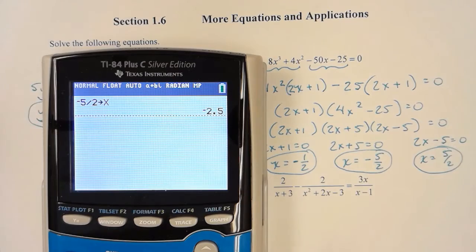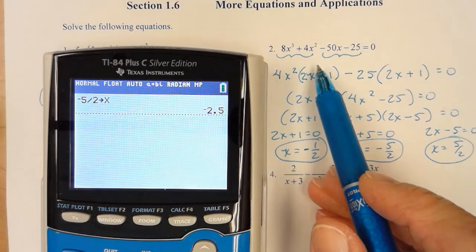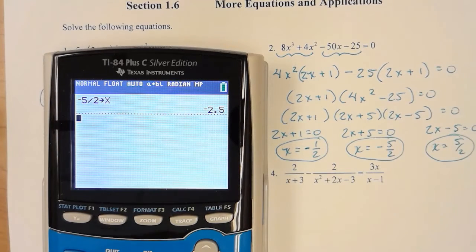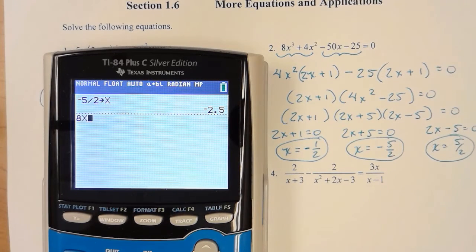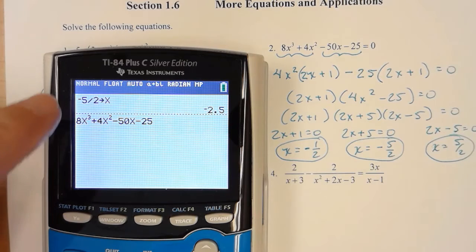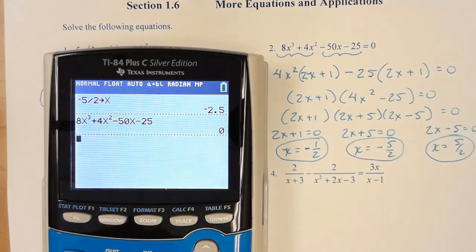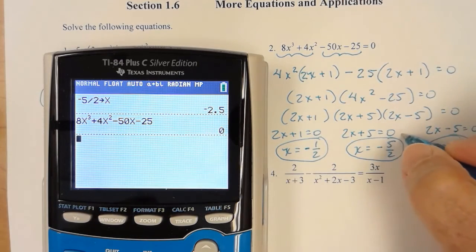So it's stored that. Now I'm going to type in the original equation and it should come out to be a true statement. So I've got 8x to the third plus 4x squared minus 50x minus 25. And once I press enter, the calculator will put that negative 5.2 in and it will solve it for me. And 0 equals 0. That's a true statement. So I did check that one.